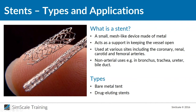For keeping the vessel open, there is something called a stent, and it can really help. Basically, a stent is a mesh-like device made of metal in most cases. The way it works is that you put it into your vessel and then inflate it. By inflating the stent, this mesh-like structure supports keeping the vessel open. For the cardiovascular system, these stents are used for many applications — for example, femoral arteries, heart arteries, renal, and coronary arteries — but there are also non-arterial applications, for example in the bronchus or the bile duct.